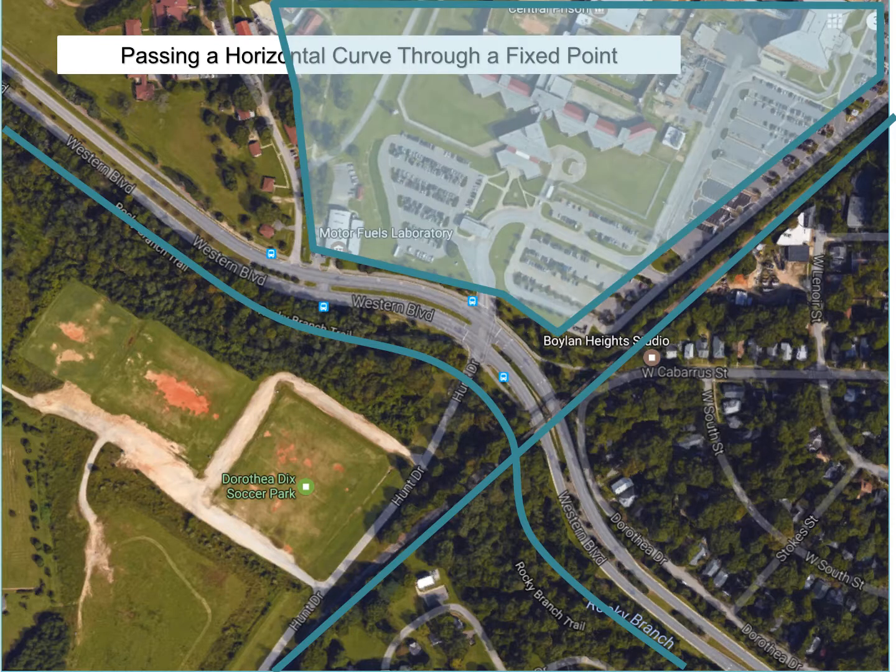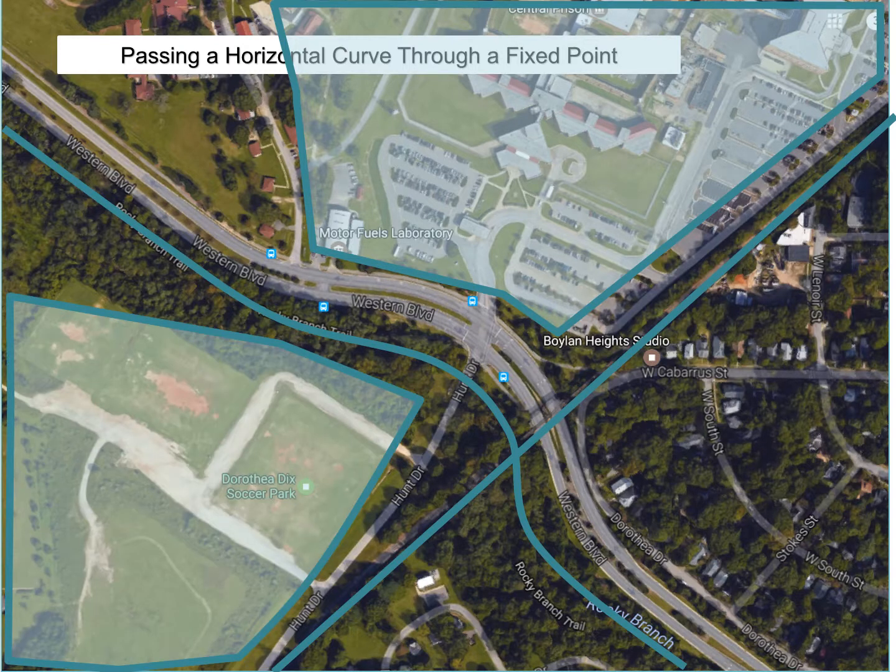The central prison existed before the roadway was constructed, and one of the original municipal landfills in the area was in this location in the bottom left of the screen. So a few existing points that needed to be avoided, which results in ultimately trying to locate or pass a horizontal curve through one particular point, and that was the point that's shown here on the screen.